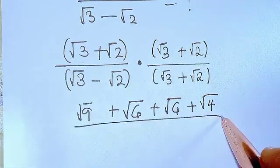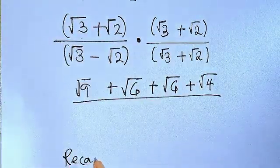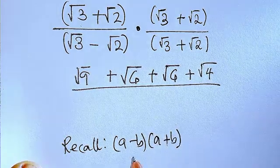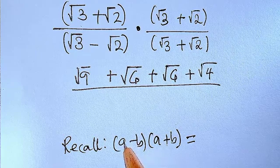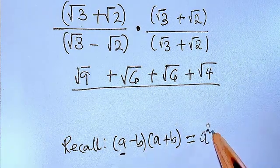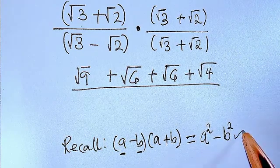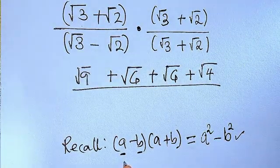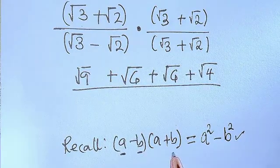Now, divided by — I want us to recall something here. When you have something like (A minus B)(A plus B), this is the difference of two squares. When you multiply everything together, you get A squared minus B squared. So looking at the denominator, it is the same as this left-hand side, where A is root 3 and B is root 2.